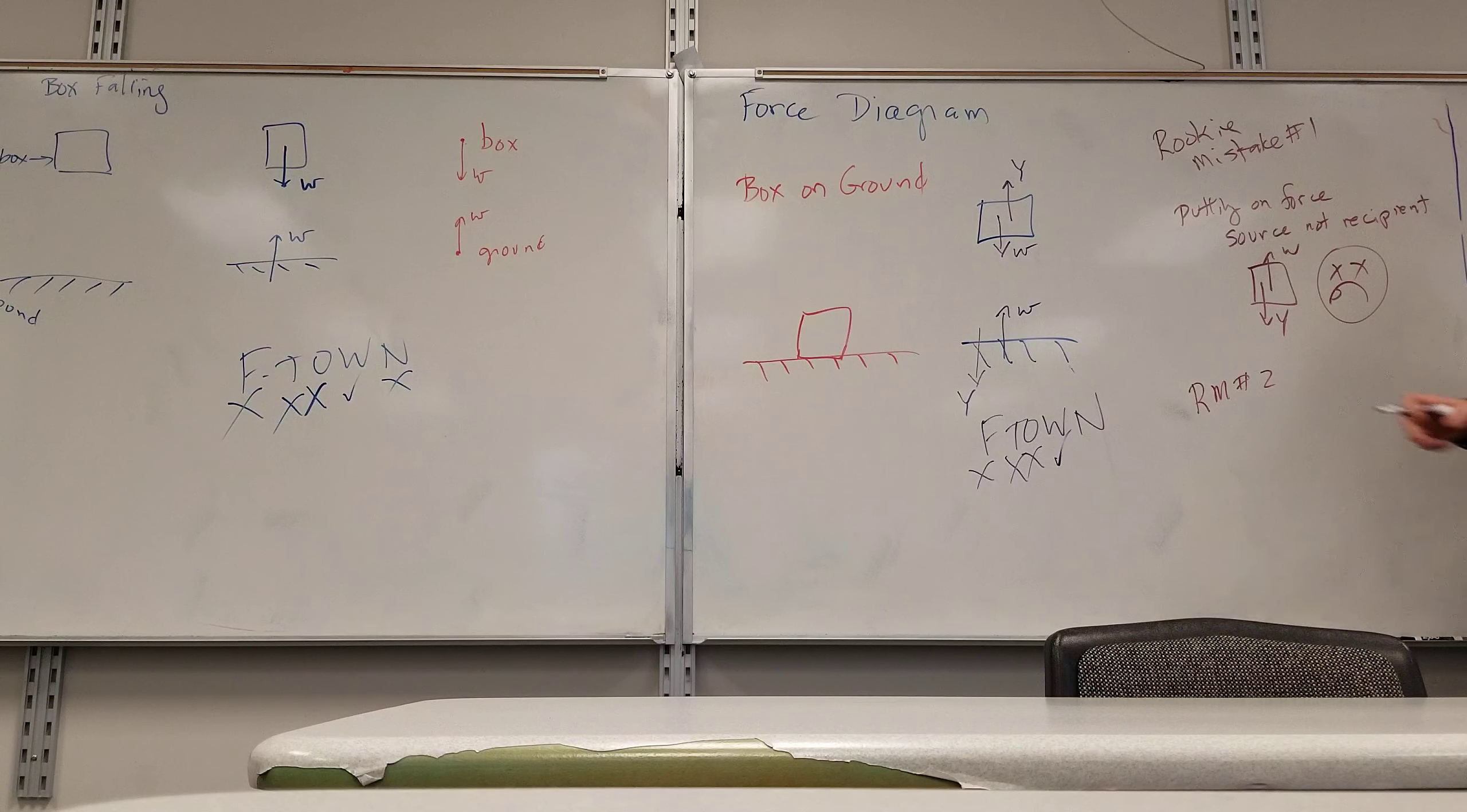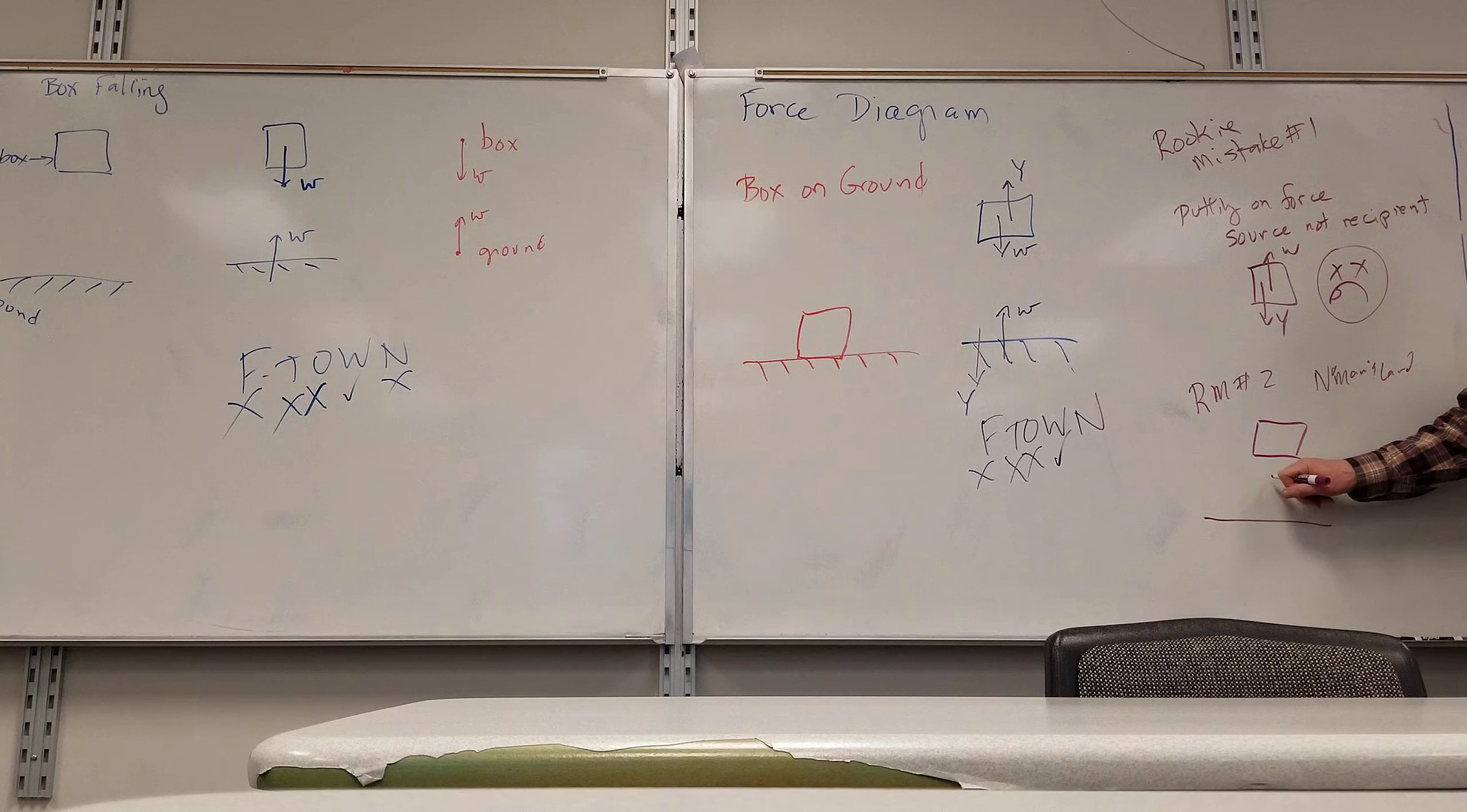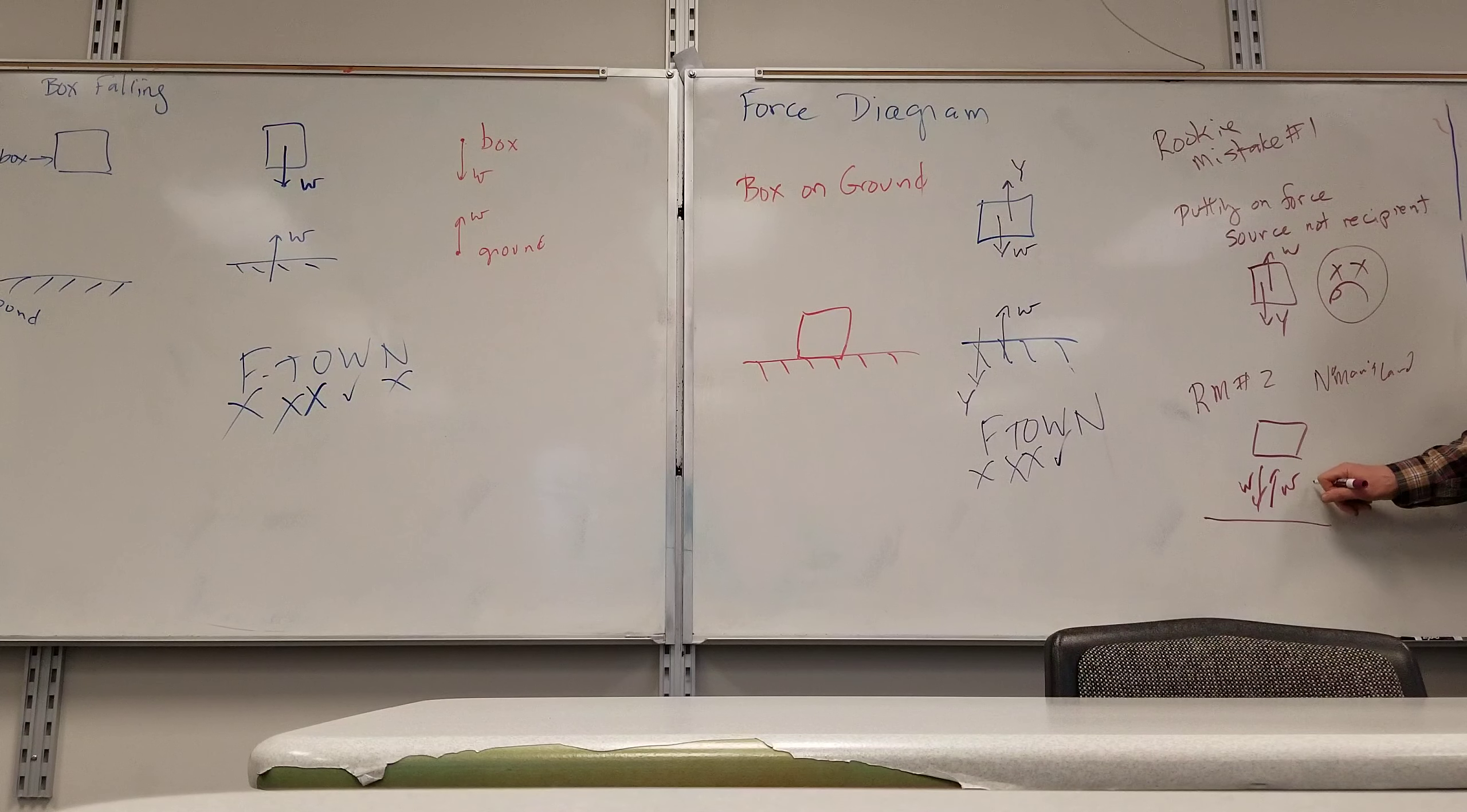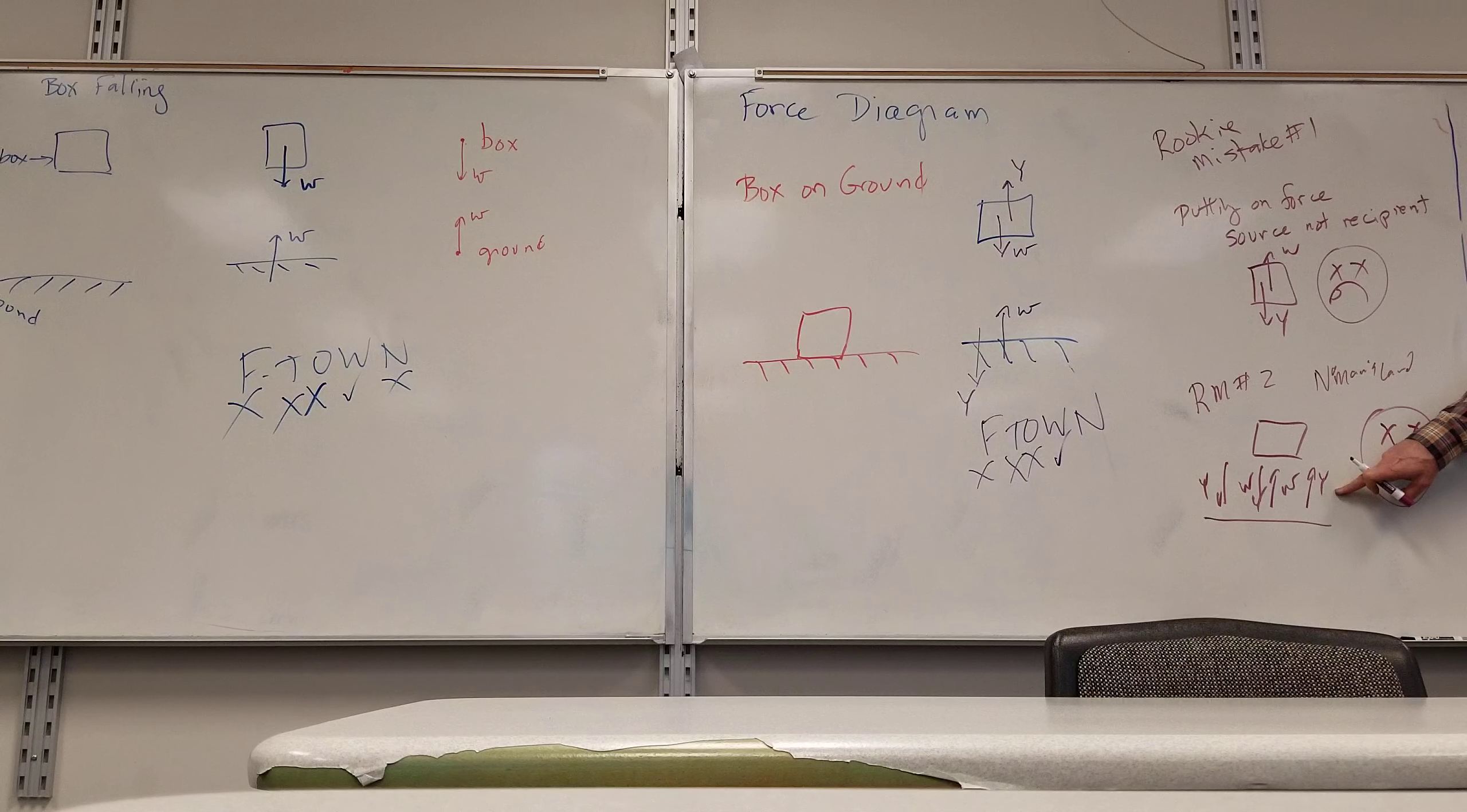Mistake number two: no man's land. Way too many times I've seen this. There's a force acting down on the box, and a force acting up on the weight, and normal forces between. I have no idea if this person knows which forces are acting on which object. Forces have to act on an object. Forces aren't appearing in between.